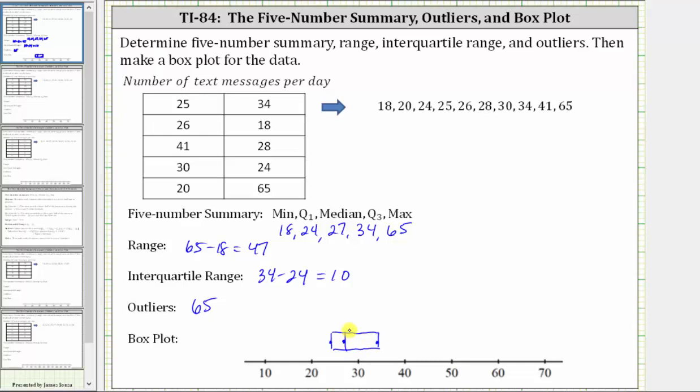Let's go ahead and create the box. Put a line through the median. And now let's go ahead and plot the minimum and maximum values. So the minimum is 18, which is approximately here. The maximum is 65.